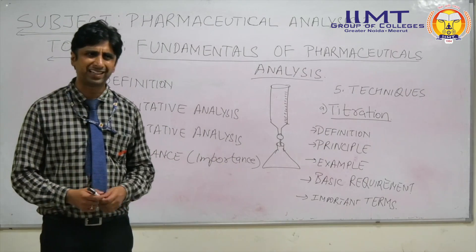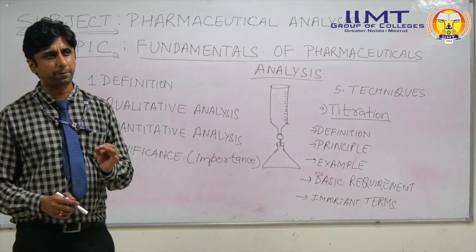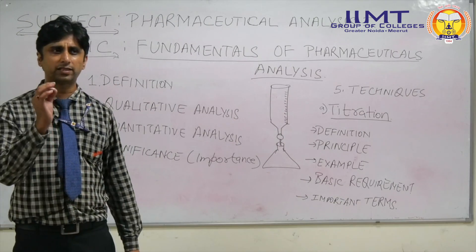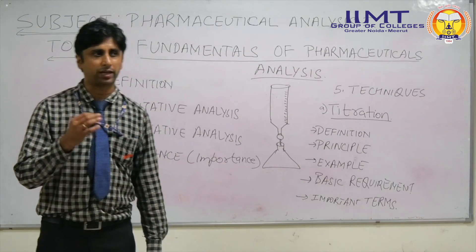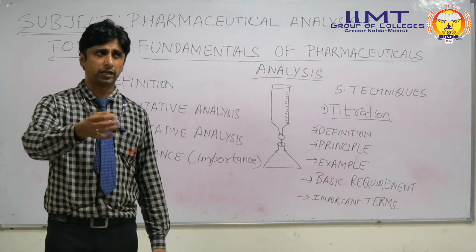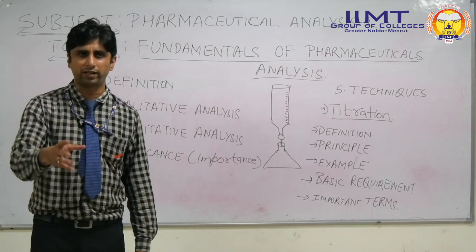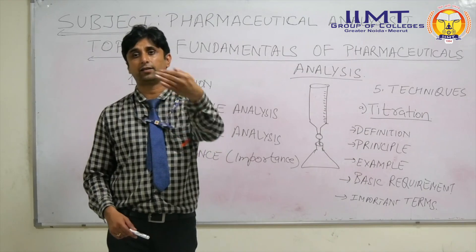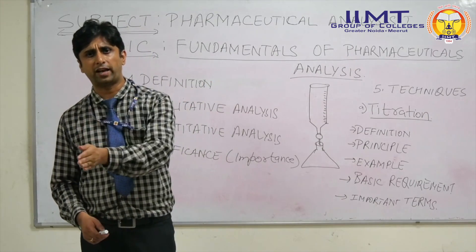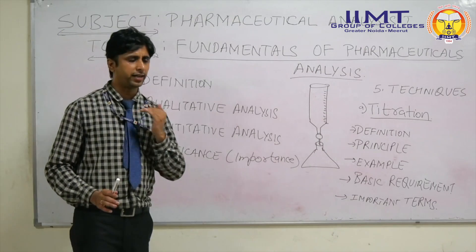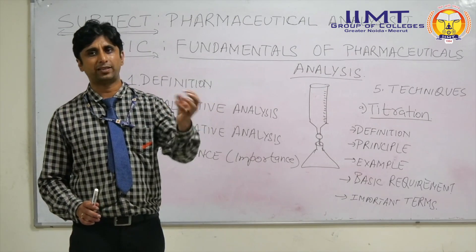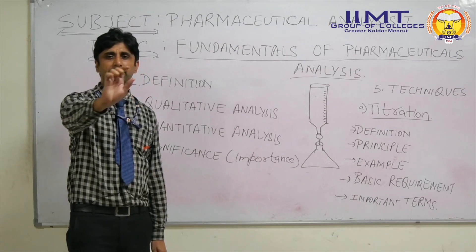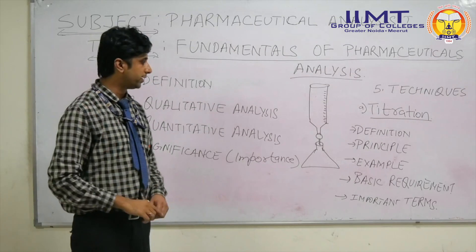Percentage purity is a term used to tell you how pure a substance is. For a quantity of 100 grams of a given substance — say NaOH or NaCl — how much of it is exactly that substance? Suppose 99.5 grams are present in that 100 gram total quantity, then we say the percentage purity of that substance is 99.5%, because exactly 99.5 grams are present in that 100 gram total. That is called percentage purity.